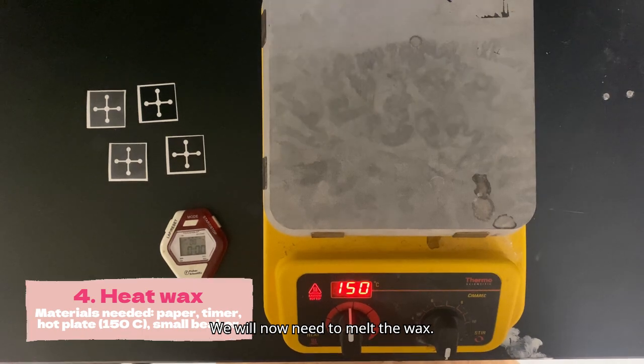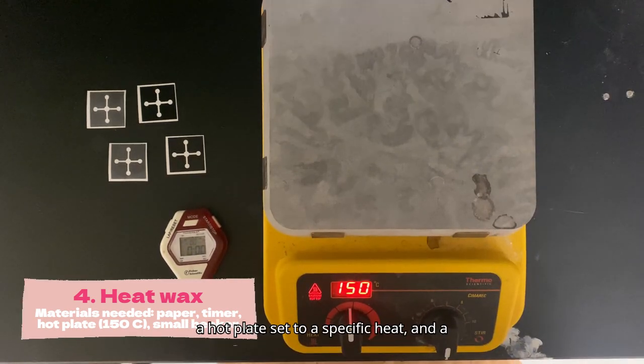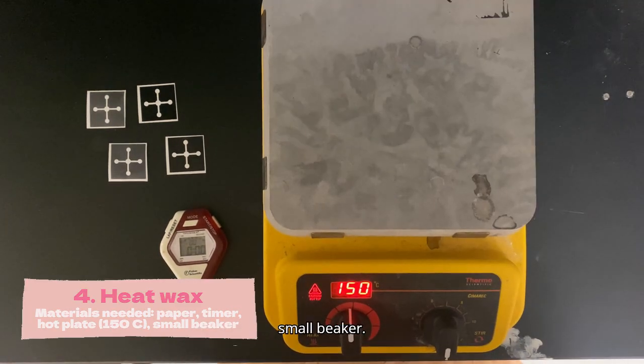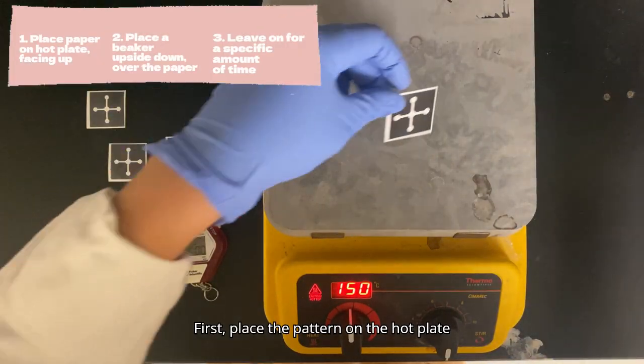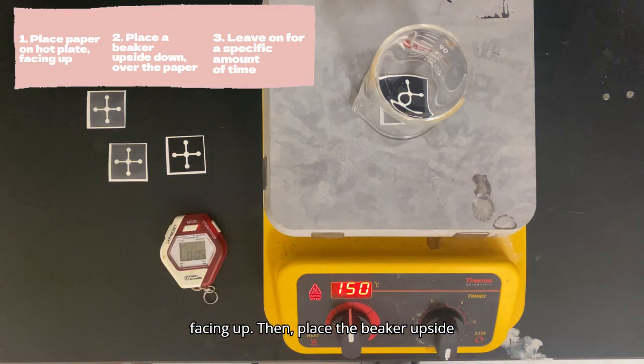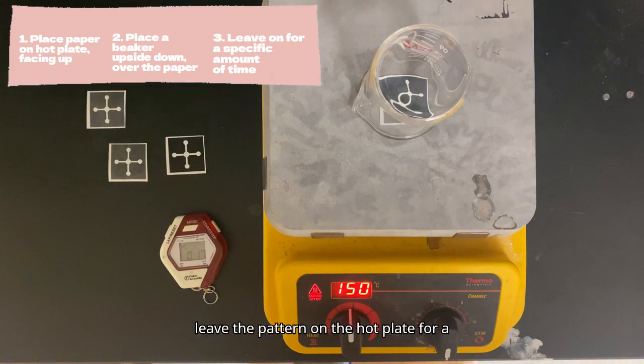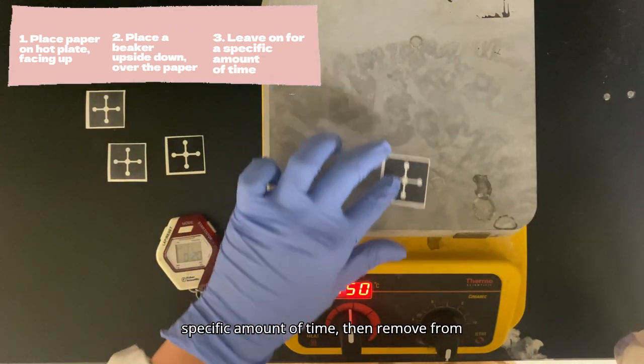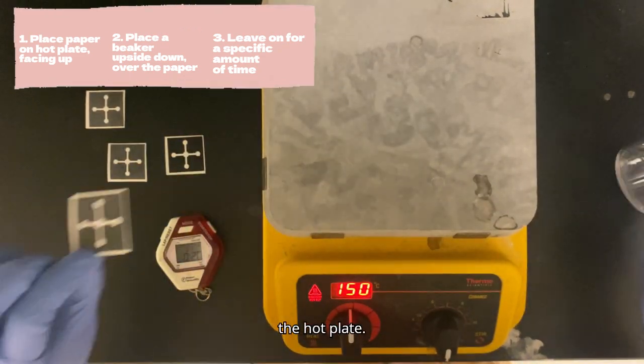We will now need to melt the wax. Supplies needed are the pattern, a timer, a hot plate set to a specific heat, and a small beaker. First, place the pattern on the hot plate facing up. Then, place the beaker upside down over the paper. Using the timer, leave the pattern on the hot plate for a specific amount of time, then remove from the hot plate.